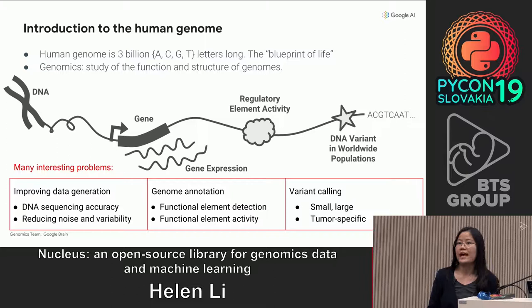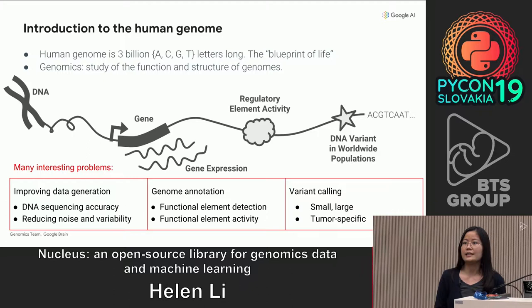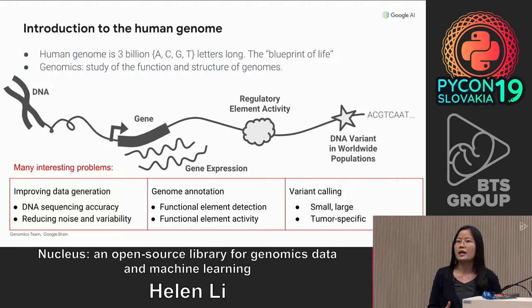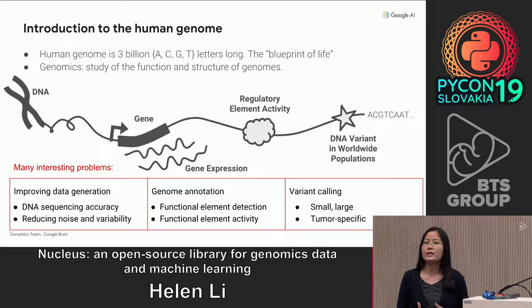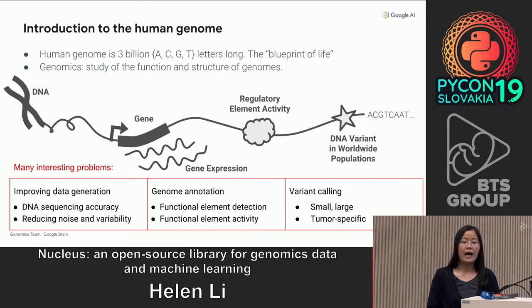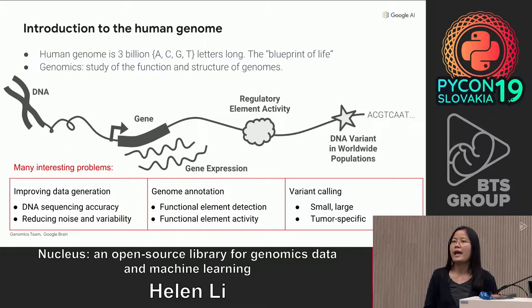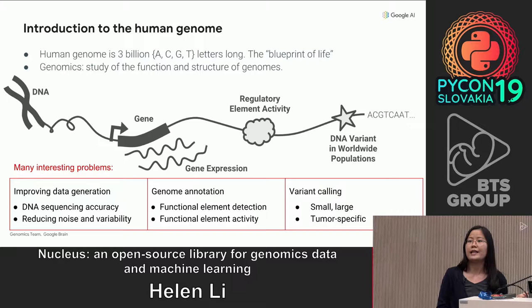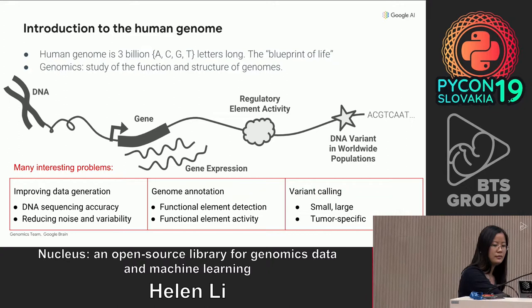There are many interesting problems in genomics. This ranges from data generation, genome annotation, to variant calling. On the data generation side, can we take the output of physical measurements to get an accurate DNA reading? Can we reduce the noise in these experiments that quantify the measurements? On the genome annotation side, can we interpret where functional elements like genes are, or predict how active they are in different cell types? On the variant calling side, can we identify where individuals vary from a reference, and how is this different for small versus large variants? And how do these changes influence traits, and what about cancer-specific variants?